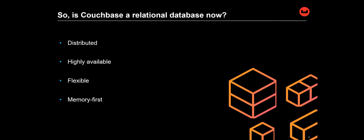You might ask — is Couchbase just a relational database now? I would say Couchbase is attempting to become a fusion of the best of both worlds. We can do relational-style things like ACID and joins, but the core focus of Couchbase remains distributed for high availability and scalability, flexible by storing data as JSON, and memory-first with a built-in managed cache for faster performance.